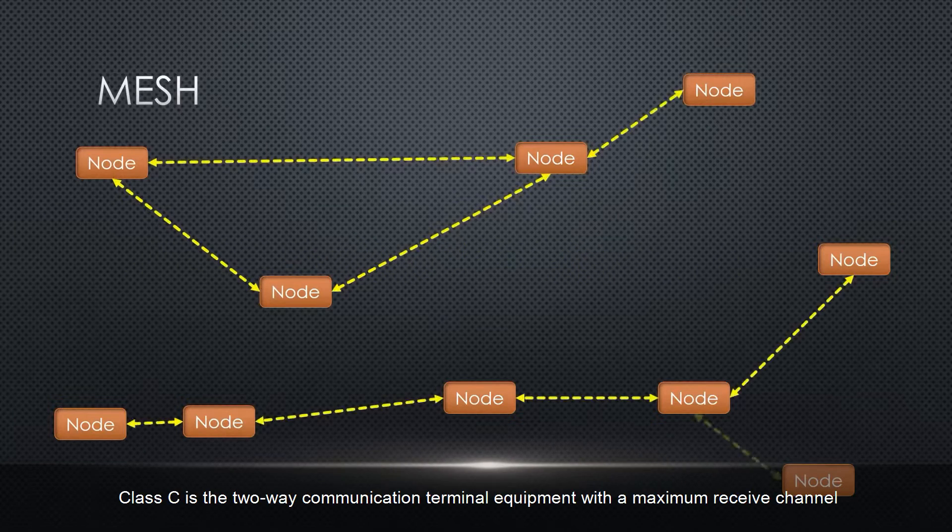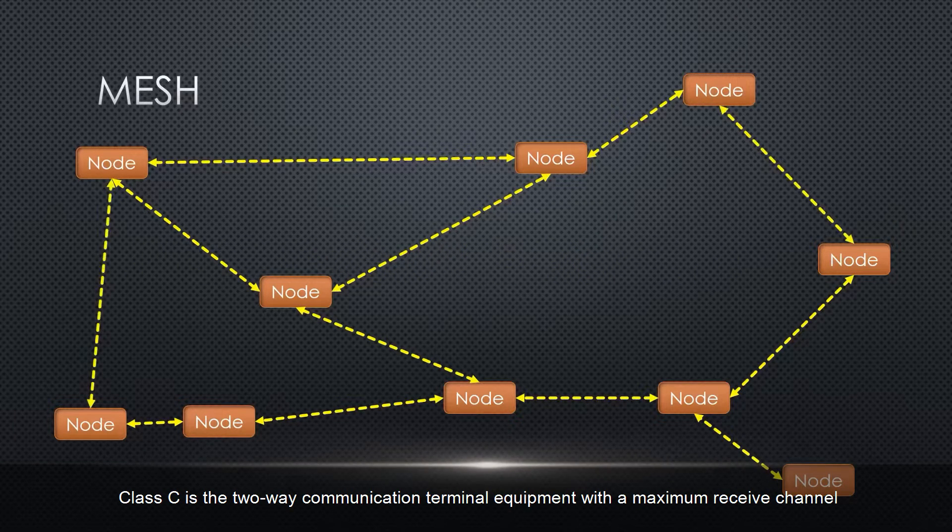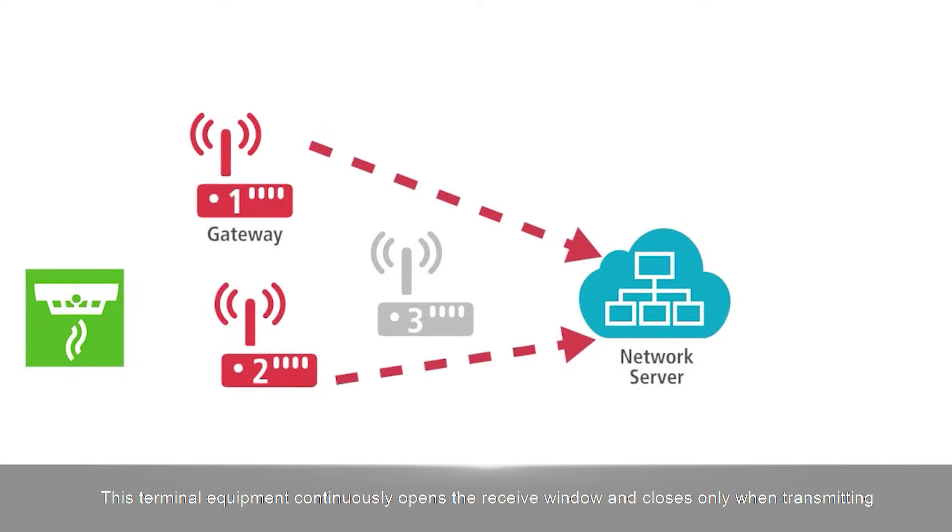Class C is the two-way communication terminal equipment with a maximum receive channel. This terminal equipment continuously opens the receive window and closes only when transmitting.